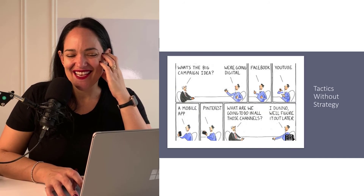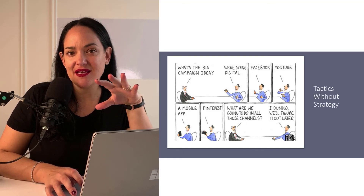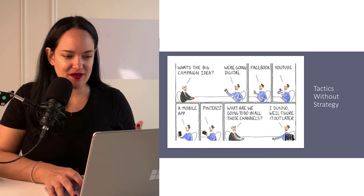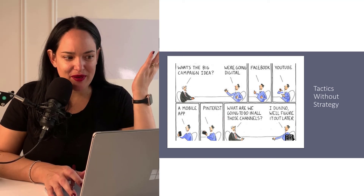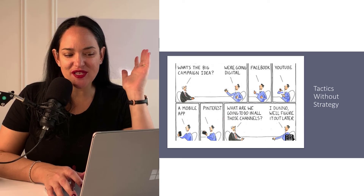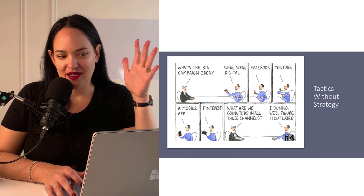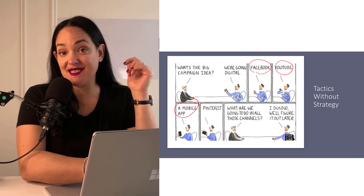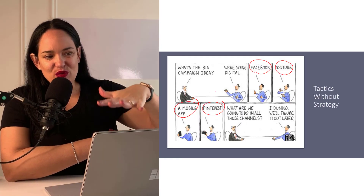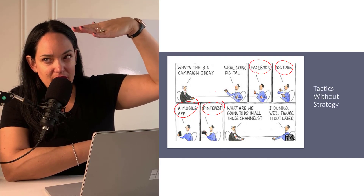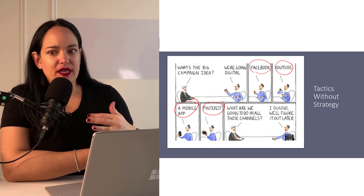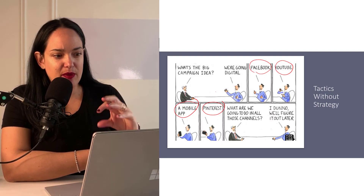It's important to make this distinction because a lot of times people just throw a bunch of tactics at things without a global strategy. We don't want to just throw things at the wall — we want to think things through first. For example, someone might say the big campaign idea is to go digital — Facebook, YouTube, a mobile app, Pinterest — but without knowing what you're going to do in those channels or what you're trying to accomplish, that's not a well-planned campaign.